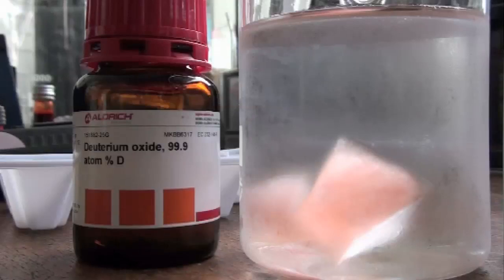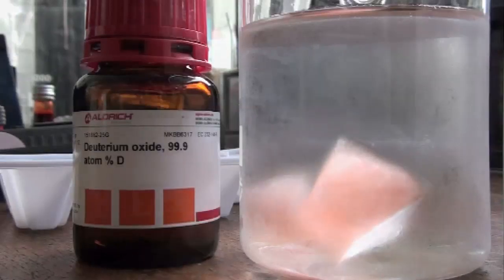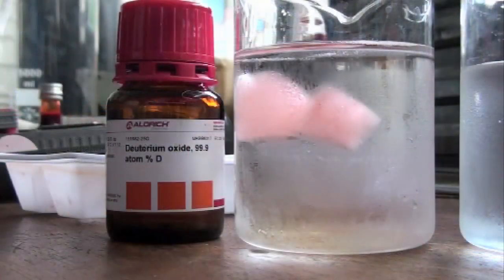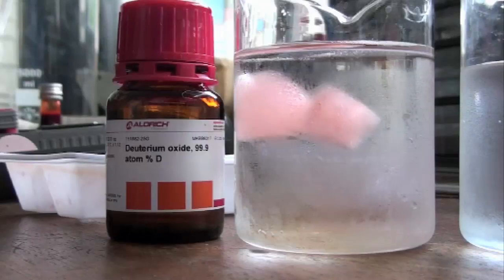As the D2O began to melt, it gradually, the cube began to rise towards the top of the water. Have you any idea why that would have happened?